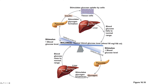When blood glucose is low, the pancreas secretes glucagon, which goes to the liver and skeletal muscles and breaks down glycogen, raising blood glucose levels. When blood glucose is too high, the pancreas secretes insulin, which stimulates glycogen formation and shuttles glucose into muscle cells, lowering blood glucose. This cycle repeats continuously based on negative feedback.